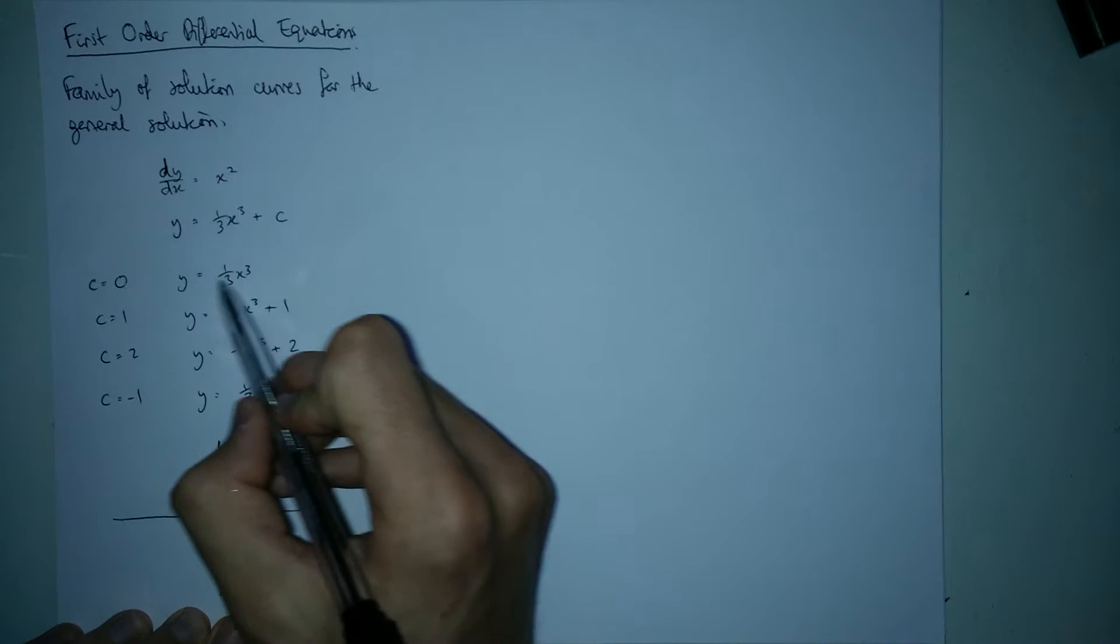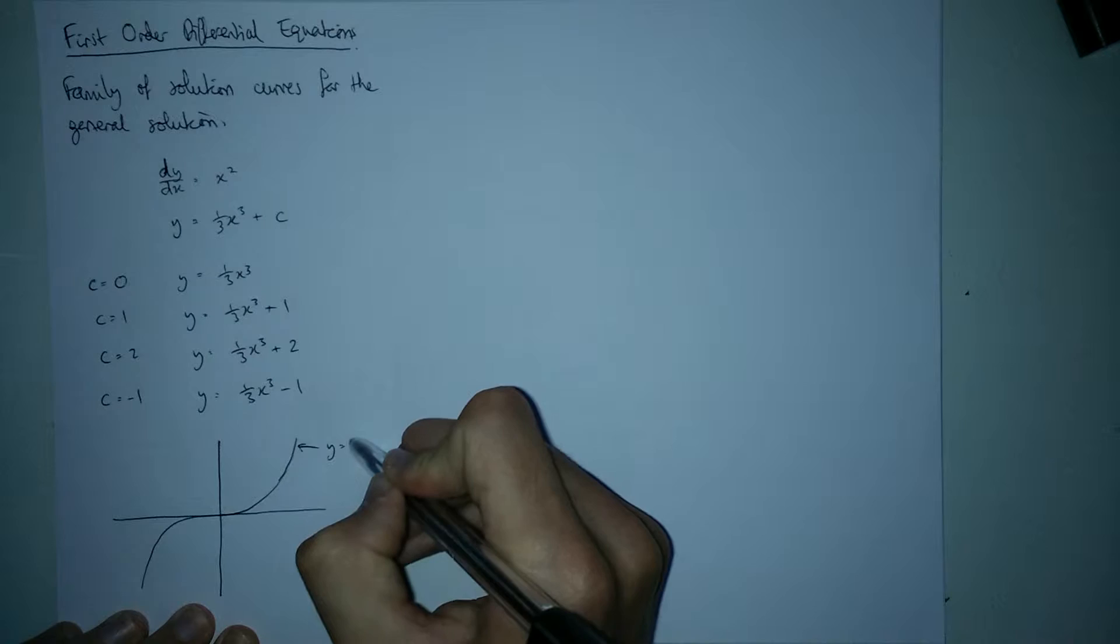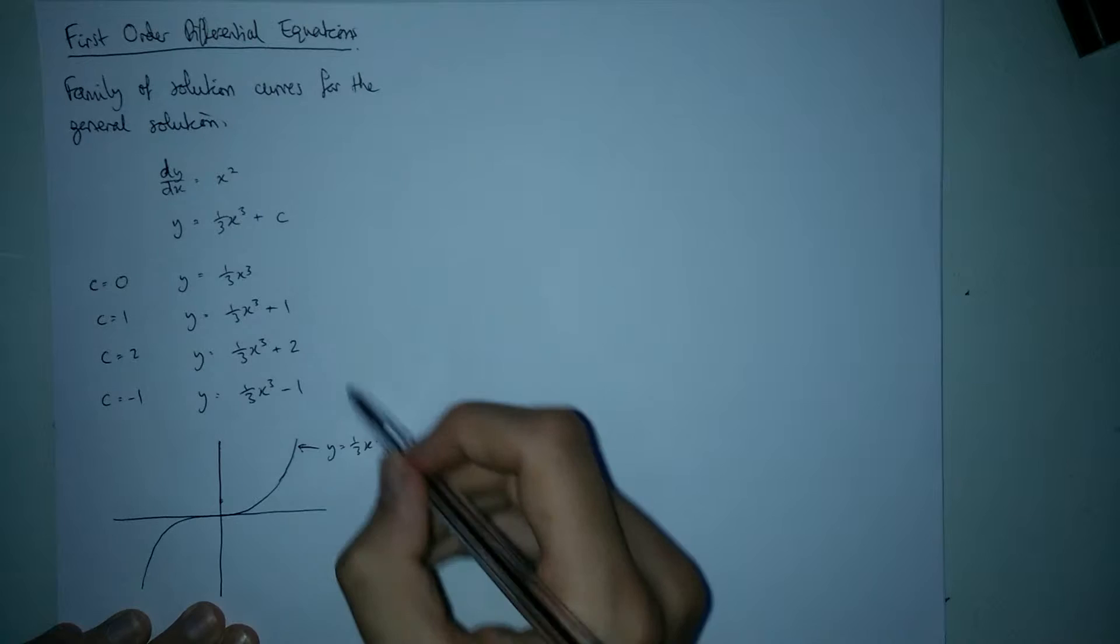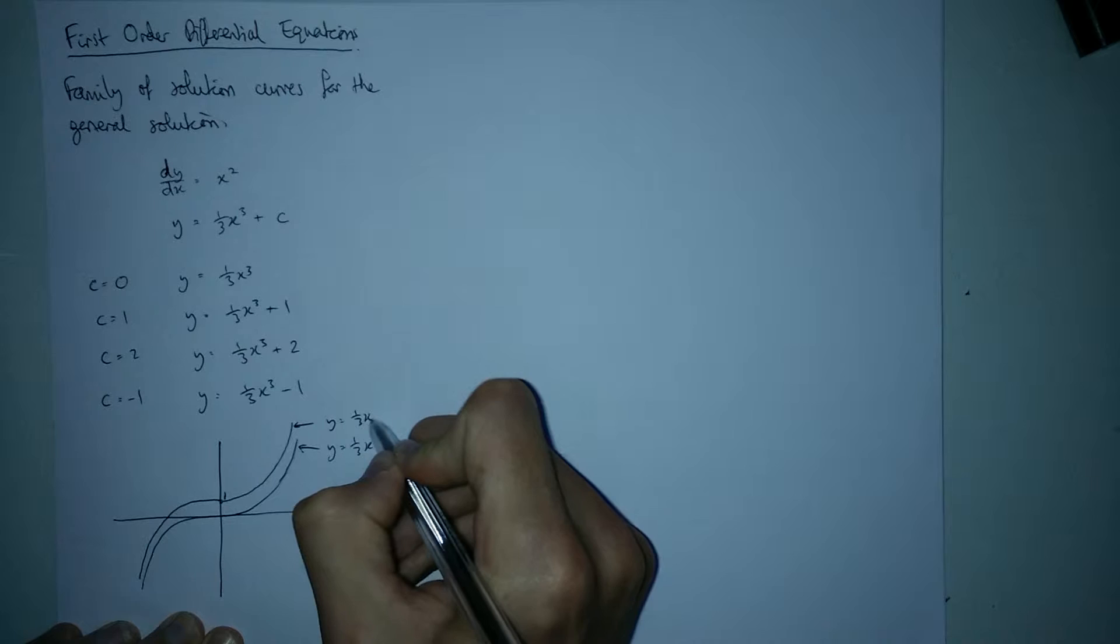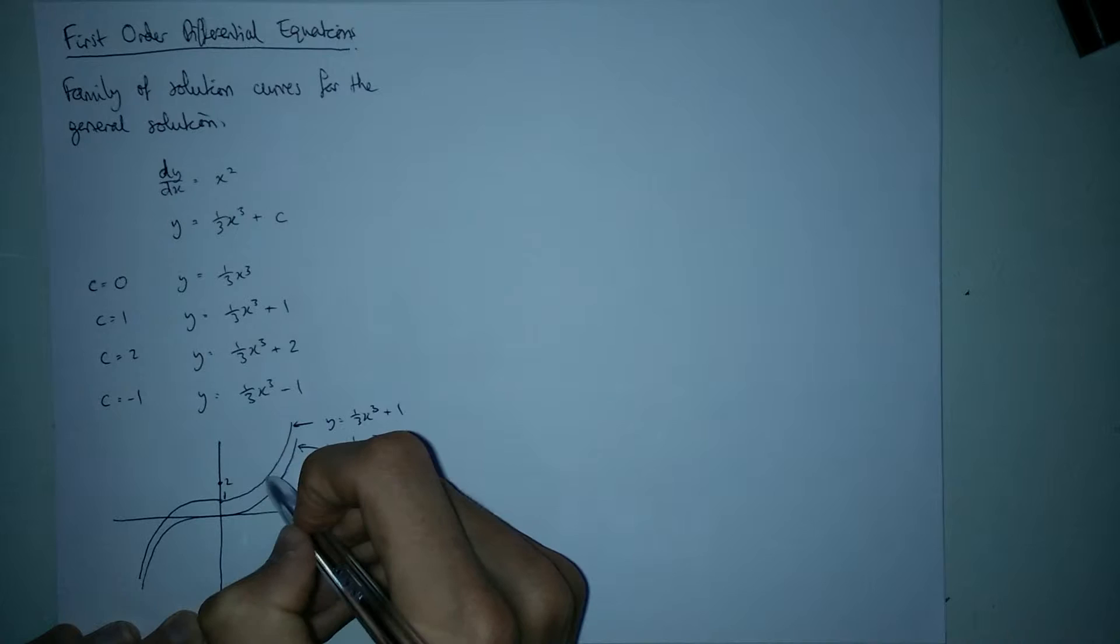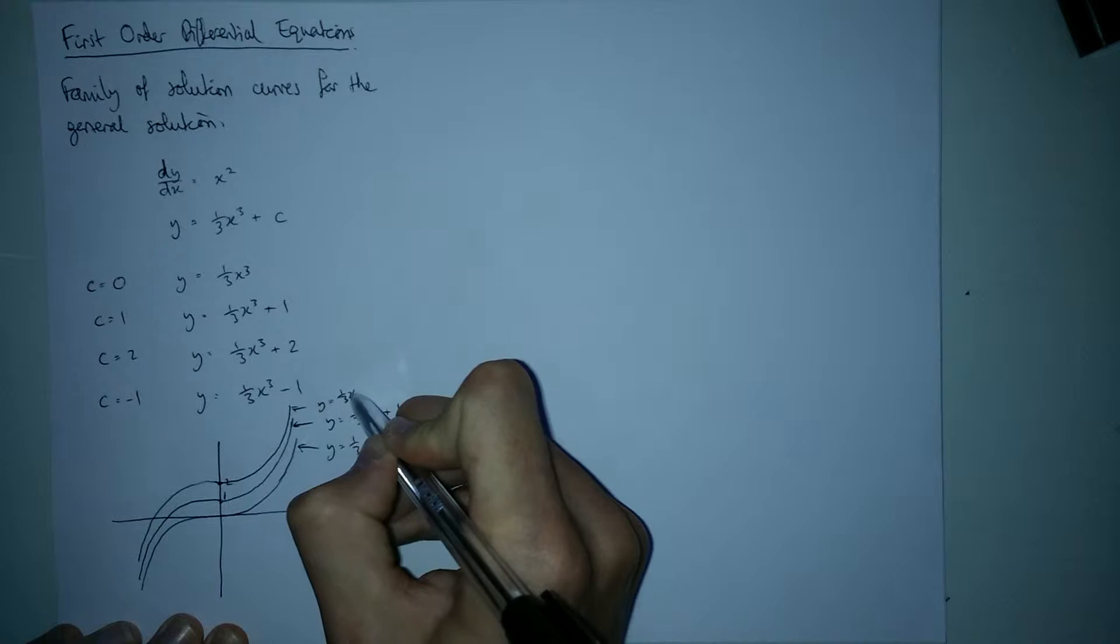So we sketch this first one: what we've got is an x cubed graph, it's a slightly changed shape because of the third. That is your y equals a third x cubed. We sketch the next one: well obviously if it just moves up by 1 on the y-axis, we get something that looks like this going through 1 here. And that graph is y equals a third x cubed plus 1. Of course if we then sketch the next one, it just goes through the point 2 and it's got a very similar shape. These guys are grouped together here and here but never touch, and that is y equals a third x cubed plus 2.